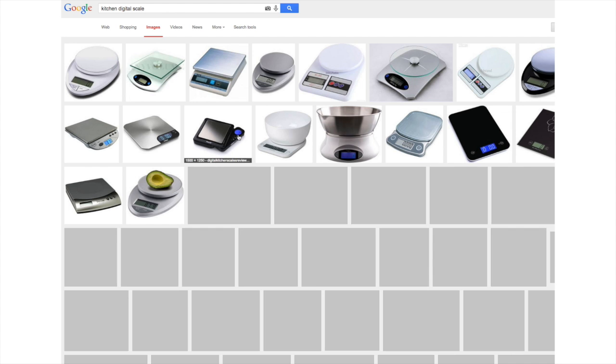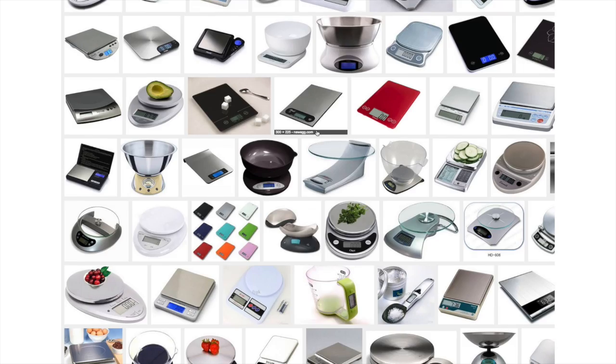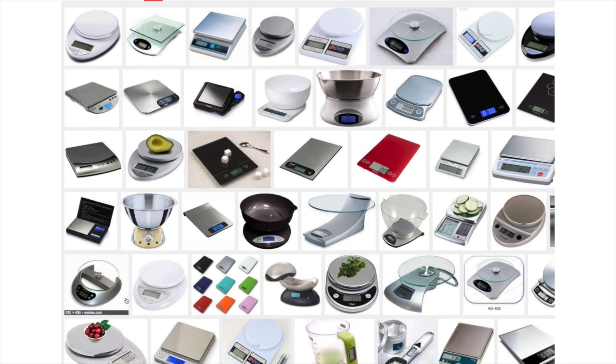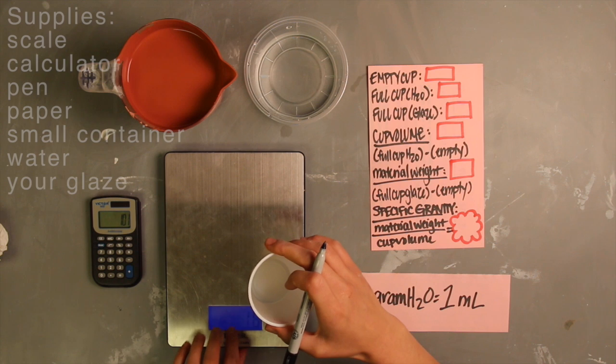To get started, you'll need to find yourself a good digital kitchen scale that can measure grams and can hold up to about 12 pounds. You can find these online or in a store anywhere from $10 to $50 depending on what you want to spend for your studio.